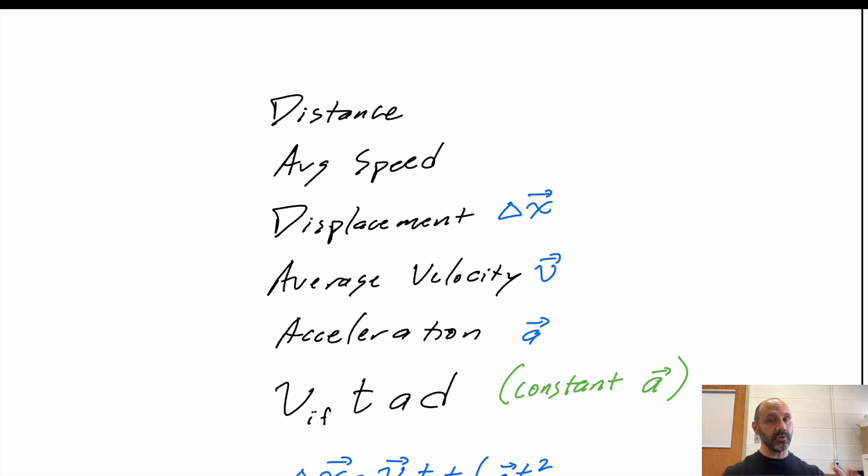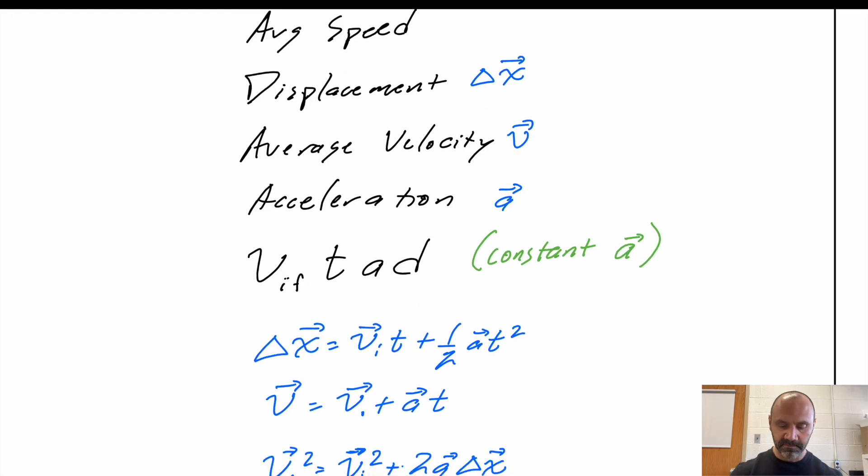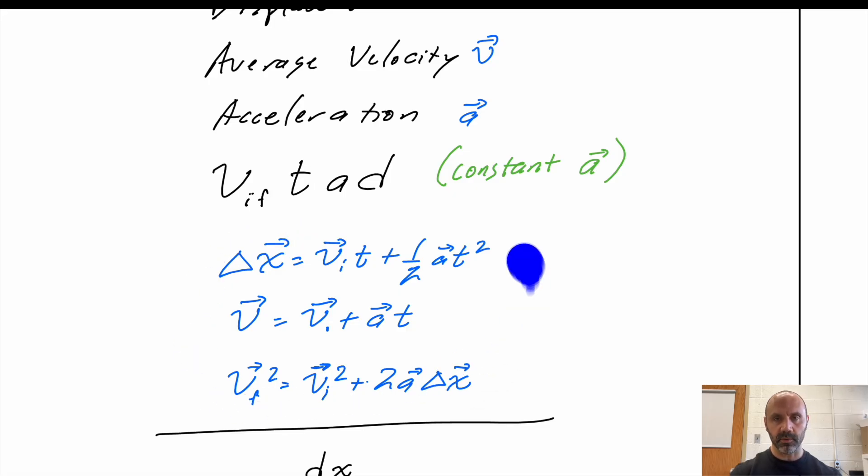And so as long as you have a constant acceleration, you can use what we call the VIFTAD equations: initial, final, time, acceleration, distance. So it's these types of equations. All of these work and they're valid and you probably have them memorized. These only work when you have constant acceleration. If you don't have constant acceleration, that's when you need to use your calculus.